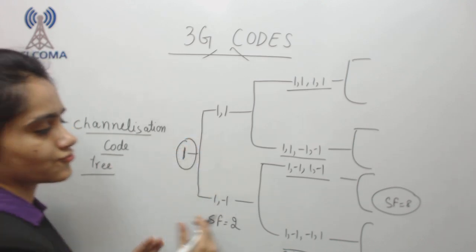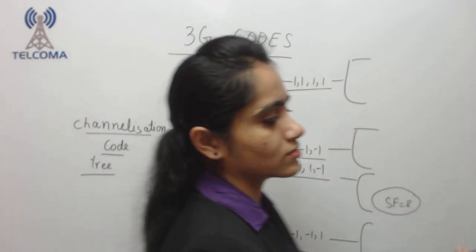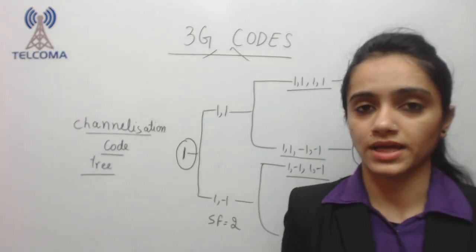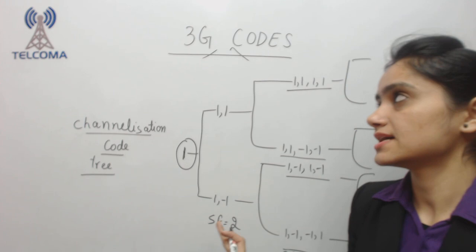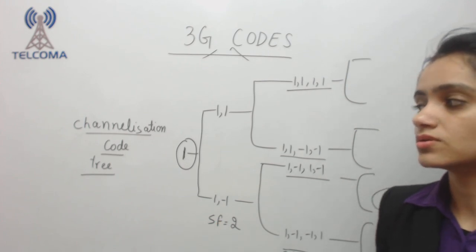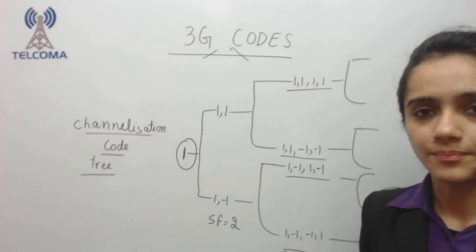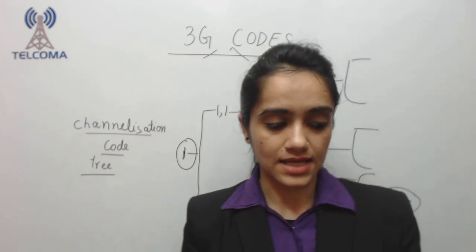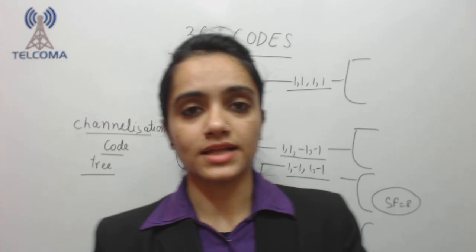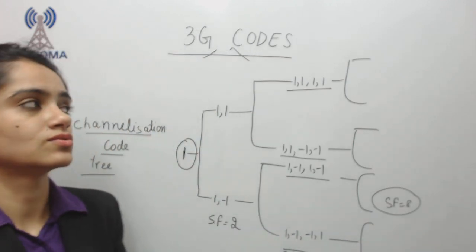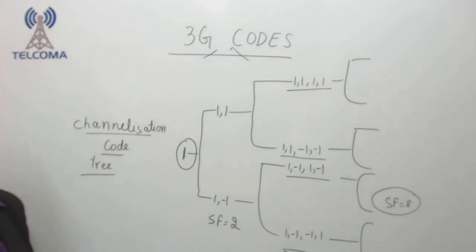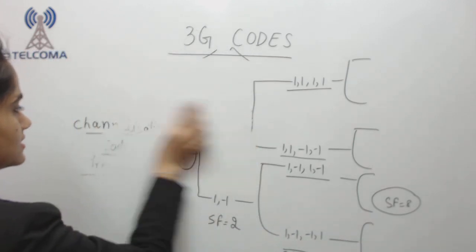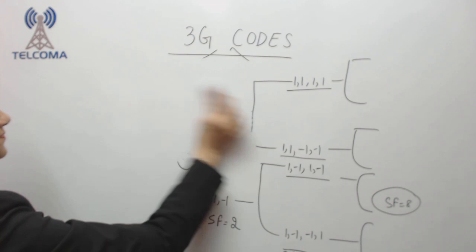This forms a tree of codes known as the channelization code tree. Channelization codes are basically used to separate out the various physical channels.